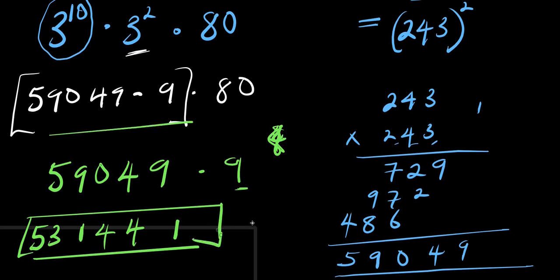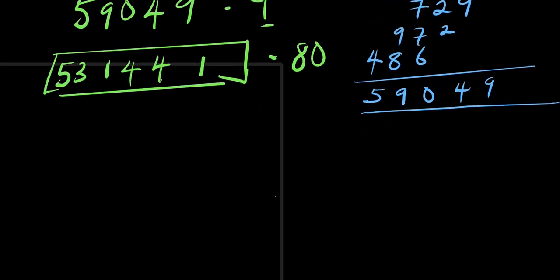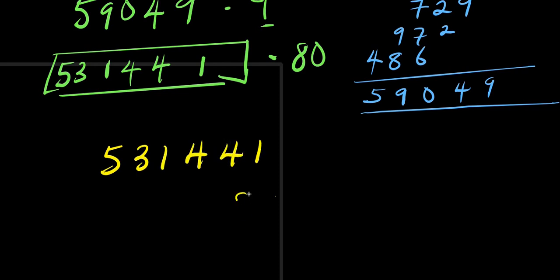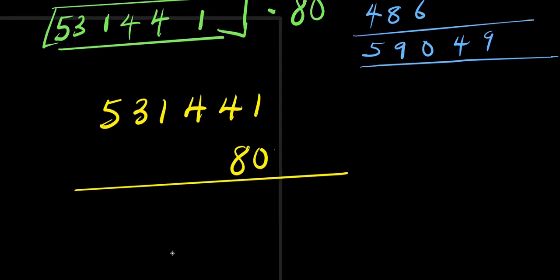We are now going to multiply this answer, five hundred thirty-one thousand four hundred forty-one, by eight to get the final answer.